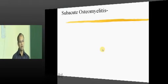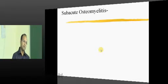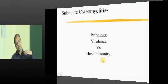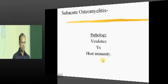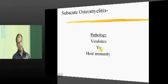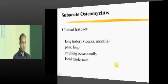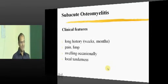Between acute and chronic osteomyelitis there is subacute osteomyelitis. If symptoms are present for less than 3 weeks it is acute; more than 3 months it is chronic; between 3 weeks and 3 months it is subacute. The pathology is determined by the battle between organism virulence and host immunity. If virulence is less and immunity is higher, it resolves within 3 weeks. If the virulence is slightly higher and immunity is on the lower side, you end up in subacute osteomyelitis, lasting less than 3 months.